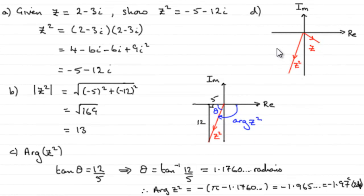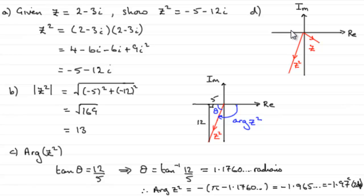Now for part D, we had to draw Z squared and Z on an Argand diagram. As you can see, I've already done it — we did it earlier down here for Z squared. You can either draw an arrow for Z squared and Z, or you could just draw a coordinate point. They'll accept both.